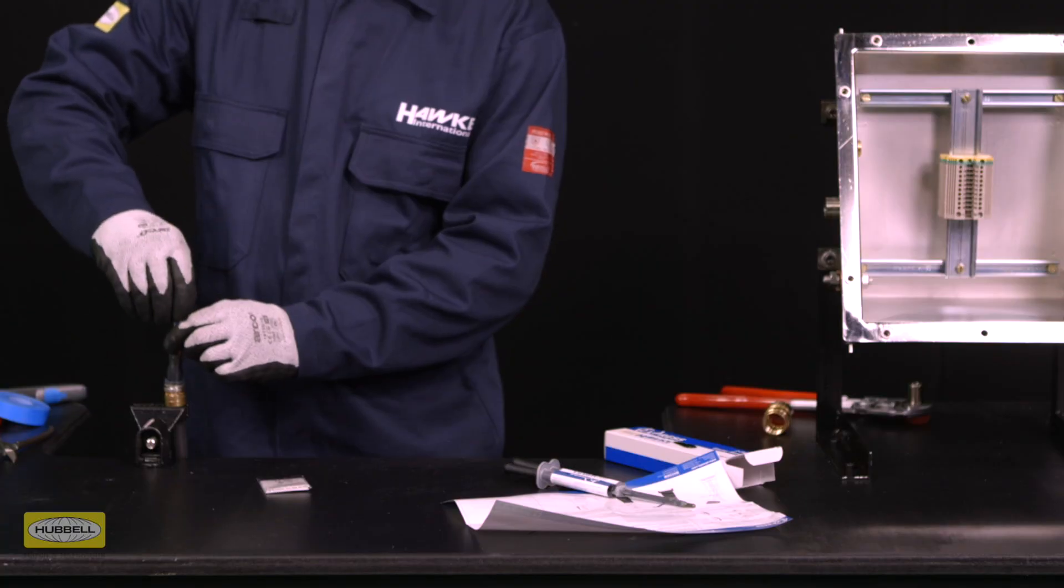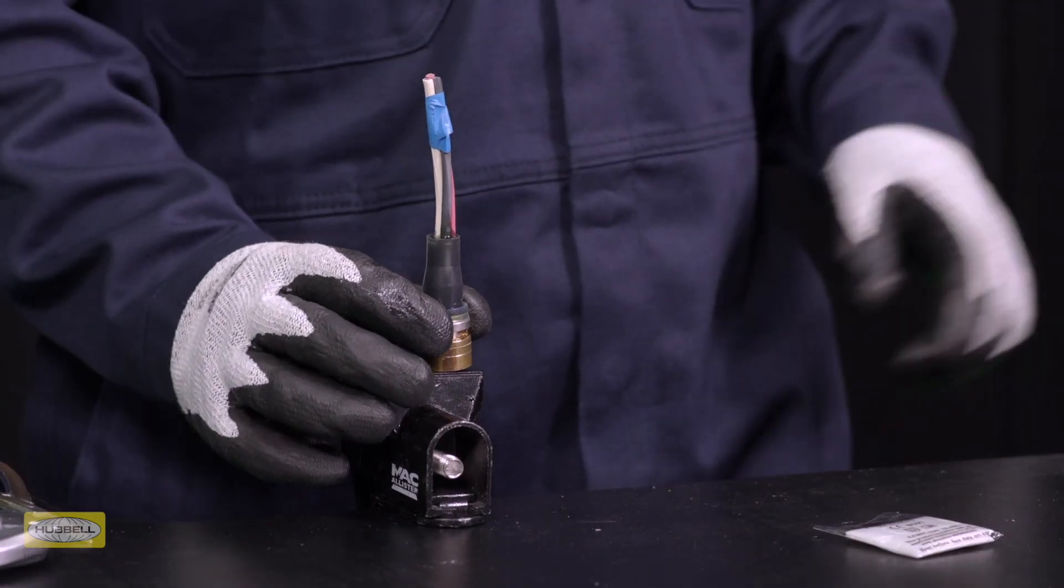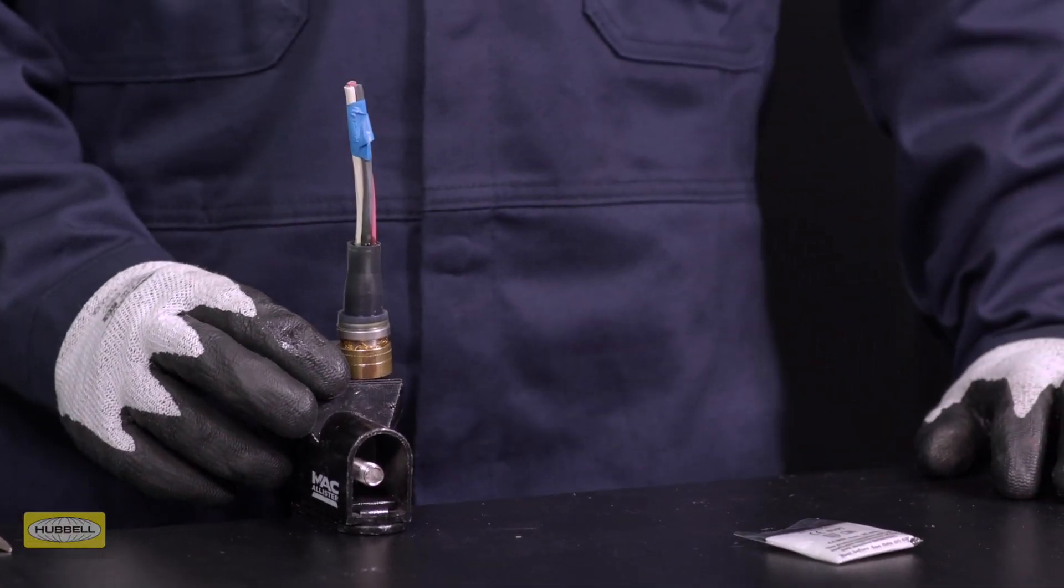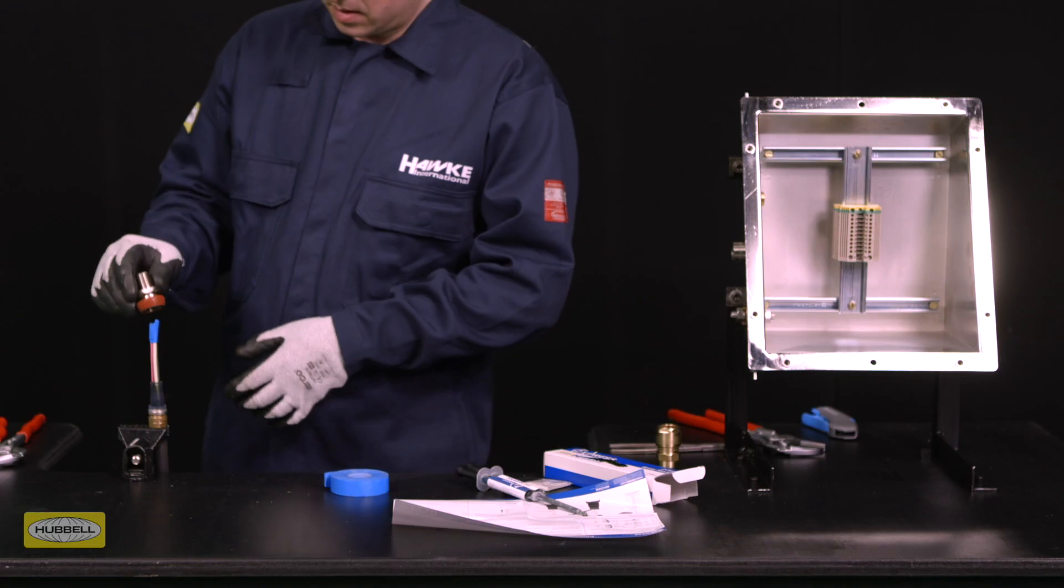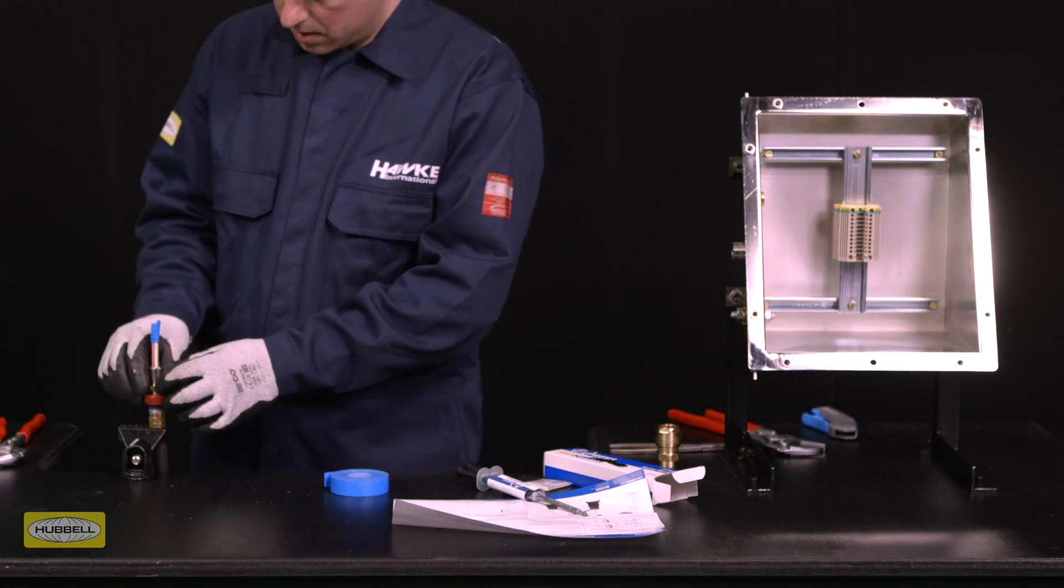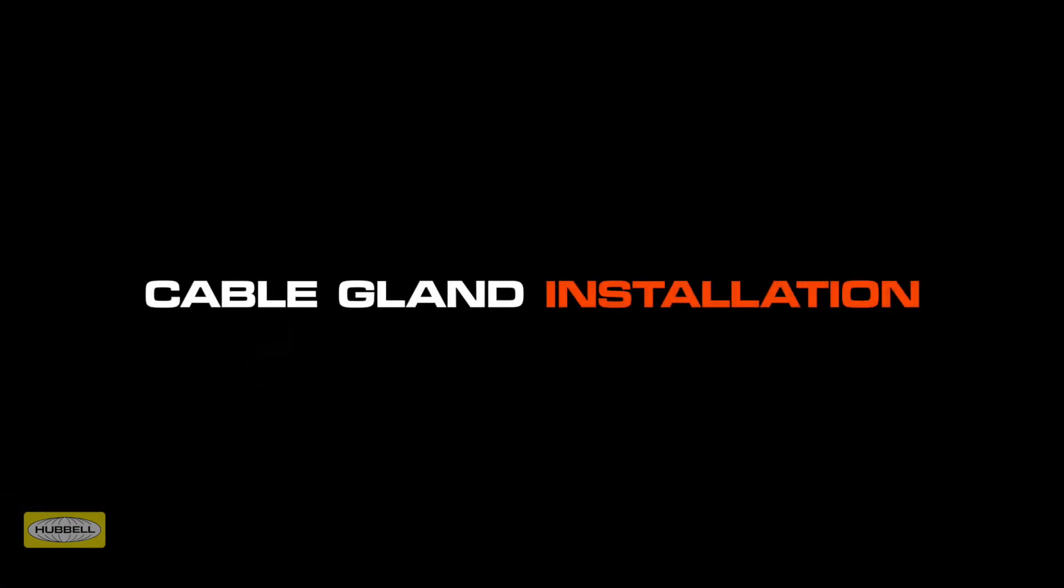Tape the cores so they stand centrally to the pot. If the fill level drops below the minimum level, top up the resin to the fill line. Place the entry over the silicon pot to ensure it is held in the correct position. Gland installation can now continue.